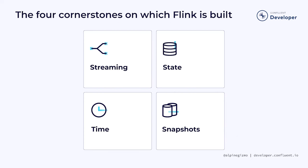In this course, we are going to do a deep dive into each of these four concepts: streaming, state, time, and snapshots. These are the big ideas on which Flink is based, and understanding how they fit together is central to understanding how Flink works. During this video, we're going to focus on streaming.